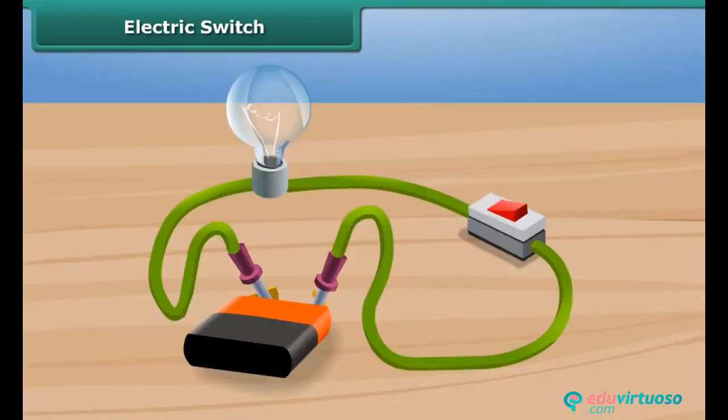The switch is so made that under normal conditions, the circuit remains open. The current does not flow through the circuit. When we press the other end of the strip on the switch, it gets connected to close the circuit. The current flows through the circuit and the bulb starts glowing.